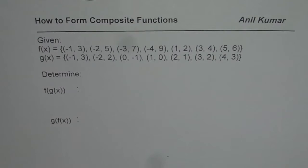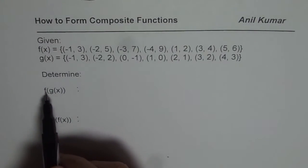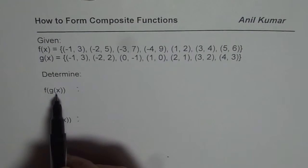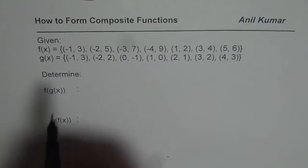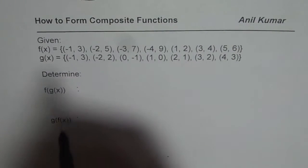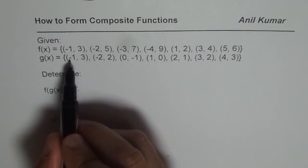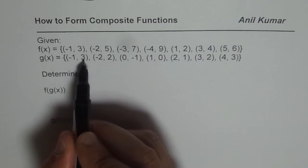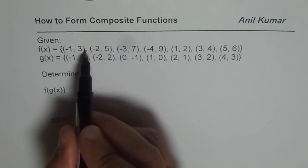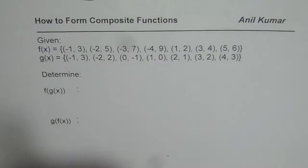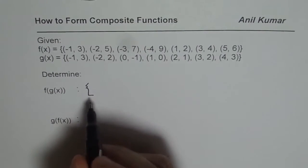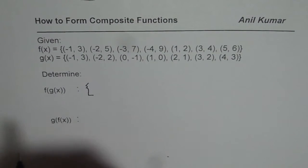Now let us see what happens when f is combined with g of x. You have to do the inside operation first — that means you begin with g of x. At x equals minus 1, you need to find the value of g, and then f of that value. So the set of points we get will represent f of g of x.